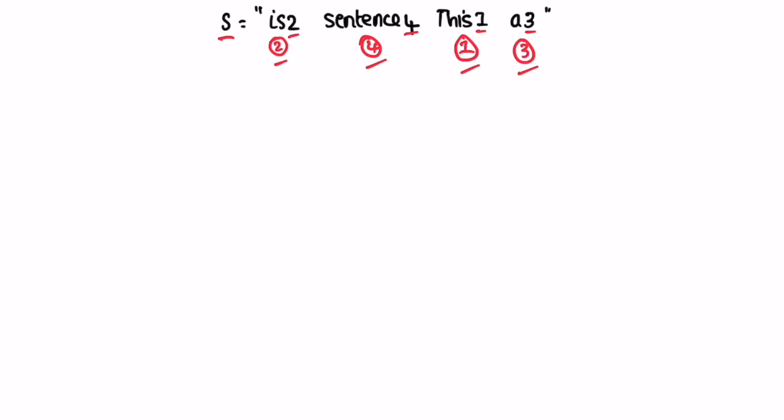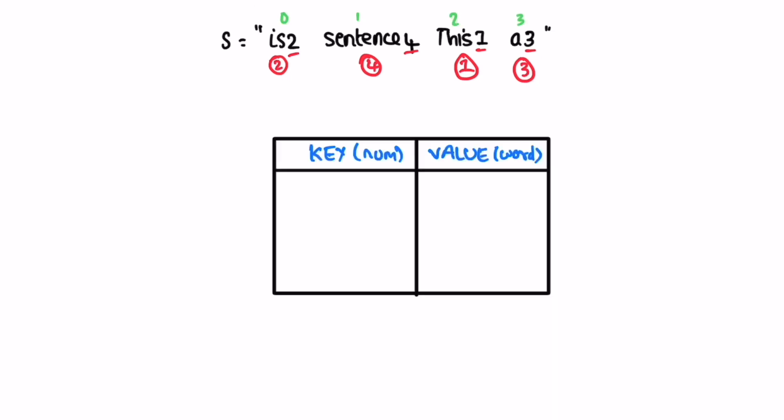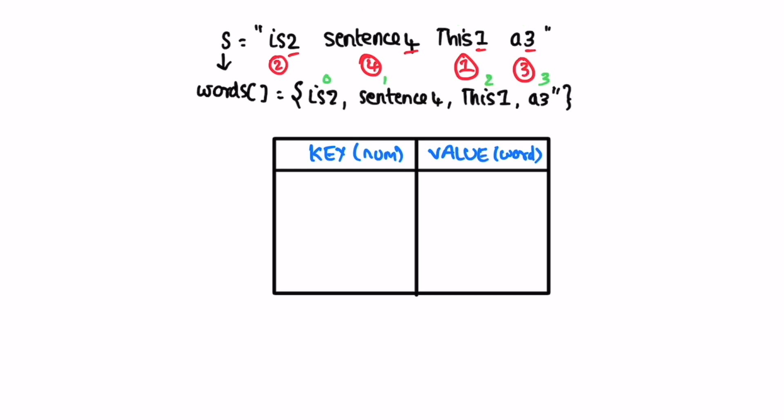We'll store the numeric value and its associated word inside a HashMap. First, we convert the input string into a words array by using the split method on the input string, splitting wherever there is a space. So the words array will contain each individual word.